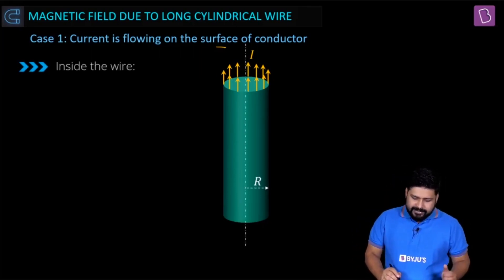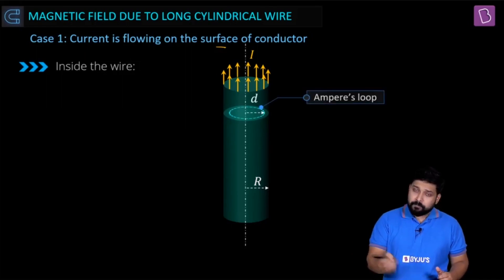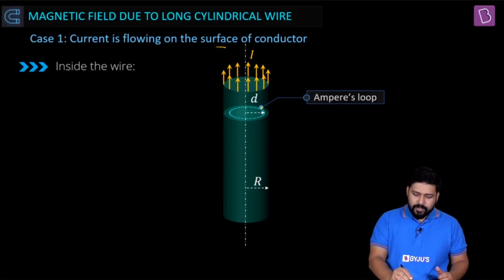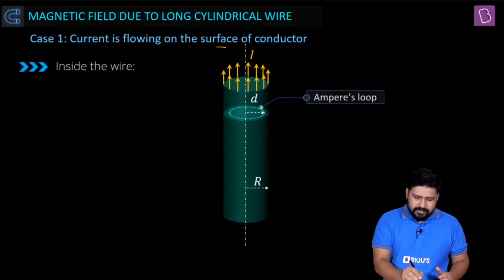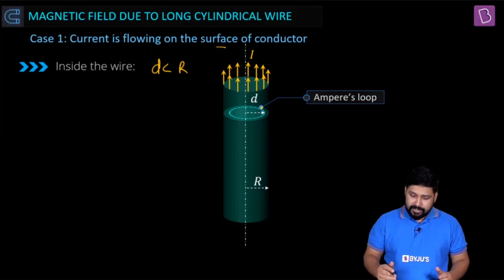Number one: inside the wire. The radius is capital R, and if I draw an Amperian loop at this point, I want to find the magnetic field at a distance of d, where d is certainly less than R, which means it is inside the wire.